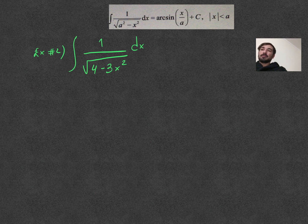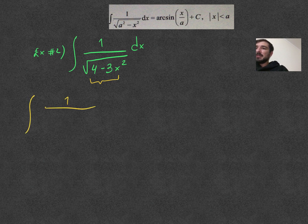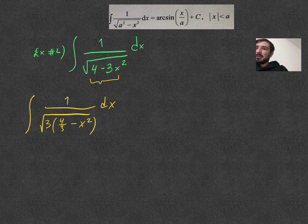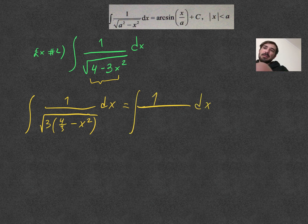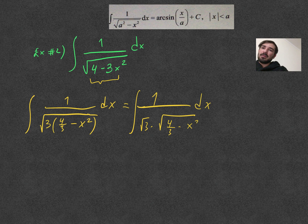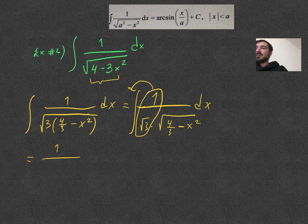So I need to rewrite this to match the formula. I can factorize this section and leave x squared alone. So: the integral of 1 dx — I'll put 3 outside, giving the square root of 3 times the square root of (4/3 minus x squared). Since 1 over square root of 3 is a constant, we can move it outside the integral: 1 over square root of 3 times the integral of 1 dx over the square root of (4/3 minus x squared).